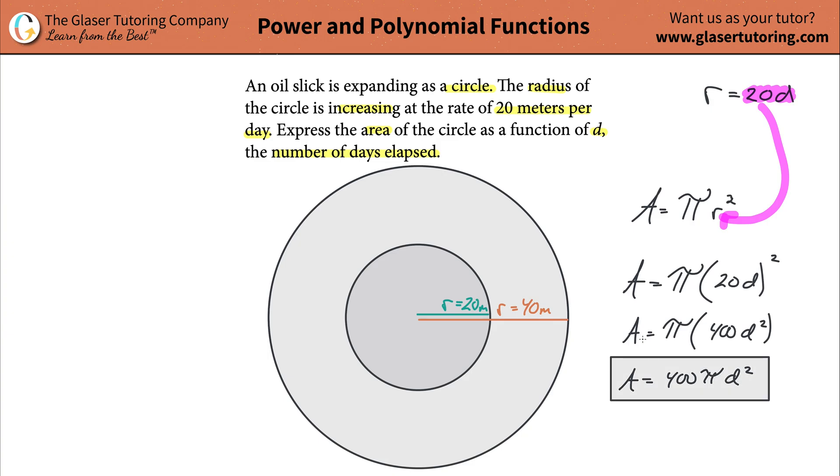And that would now be the formula for the area as a function of the number of days. So if two days pass by, you would be able to find the area. If four days pass by, you could find it, et cetera. And that's all there is to it.